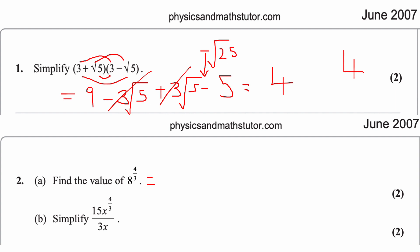Question 2a: find the value of 8^(4/3). Take the cube root of 8 first, which is 2, then raise it to the power of the numerator 4: 2⁴ = 2 × 2 × 2 × 2 = 16.